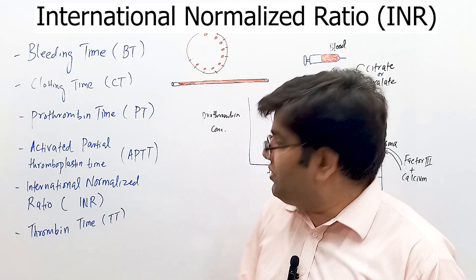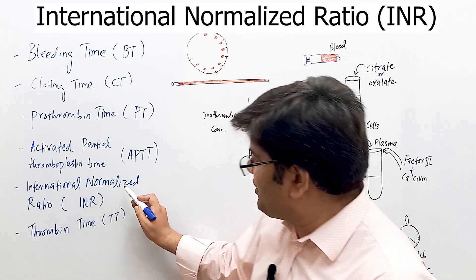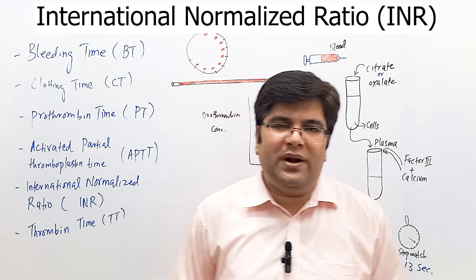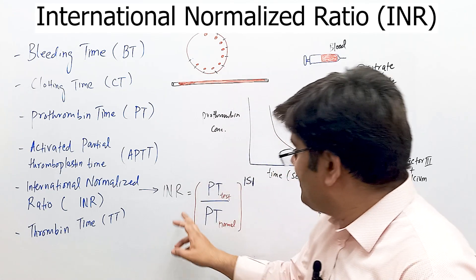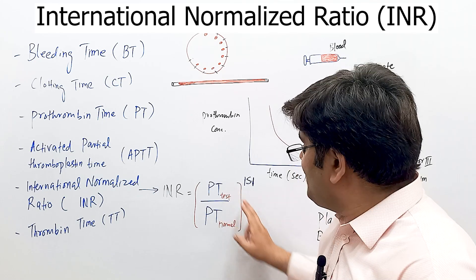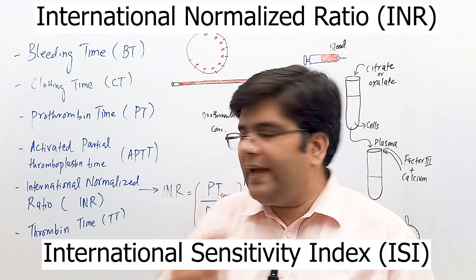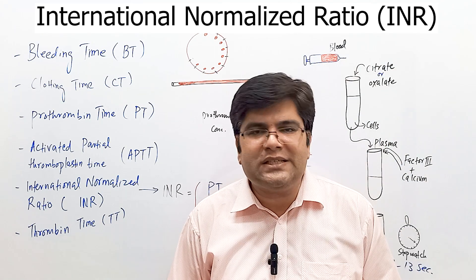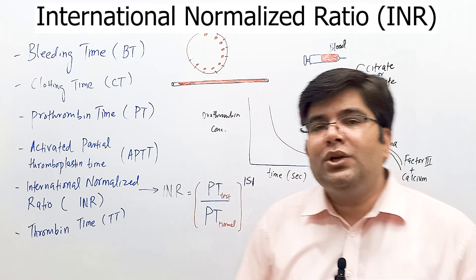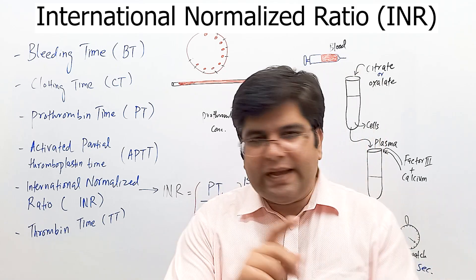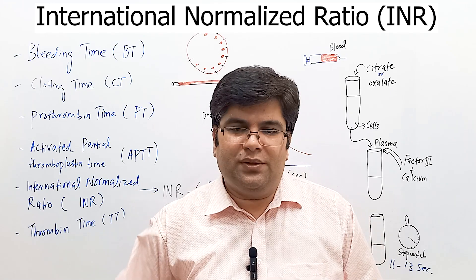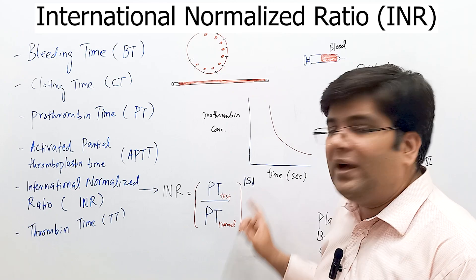To solve this problem, we use the international normalized ratio (INR), which standardizes measurements of prothrombin time. INR is defined as the ratio of the patient's prothrombin time to the normal control prothrombin time, raised to the power of ISI. ISI — the international sensitivity index — is a specific value assigned by the manufacturer to each batch of tissue factor, indicating its activity relative to a standard sample. The normal value of ISI varies between 1 to 2.